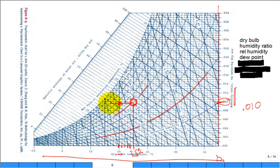If I continue to cool it, I'll finally get to a point where it is saturated air. What is the temperature now? Around 12–13°C. So that's the dew point temperature for those conditions. It doesn't mean I have to physically cool it — it just means if I do cool it, it will condense at 12°C.